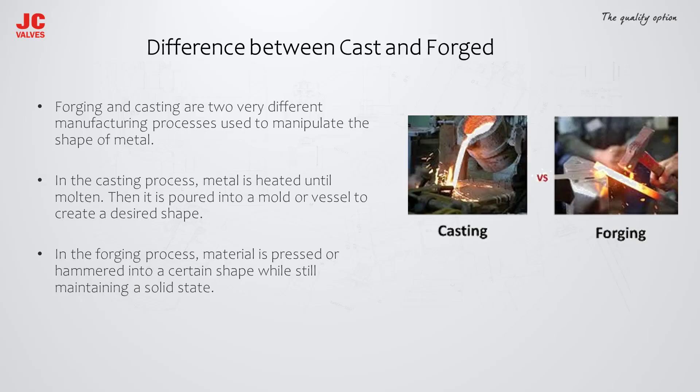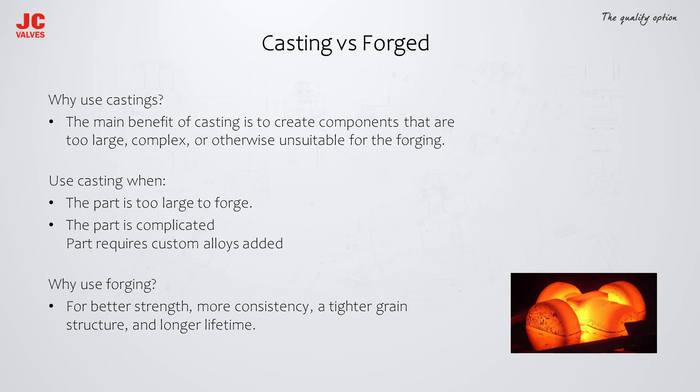Forging and casting are two very different manufacturing processes used to manipulate the shape of metal. In the casting process, metal is heated until molten, then poured into a mold or vessel to create a desired shape. In the forging process, material is pressed or hammered into a certain shape while still maintaining a solid state.